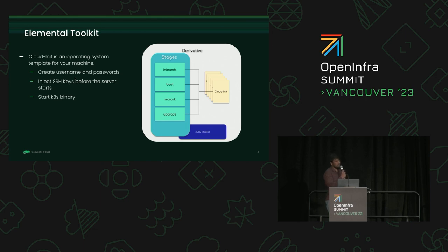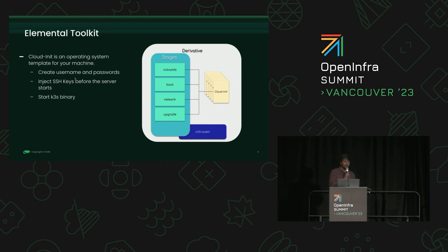You can run scripts even before the server is up. Elemental Toolkit can execute these config files at different stages of the boot process: initramfs, boot, network, or even upgrade. Upgrading here is special — rather than upgrading packages individually like with Ubuntu or OpenSUSE, the upgrade happens by booting into a completely new bootable container image.